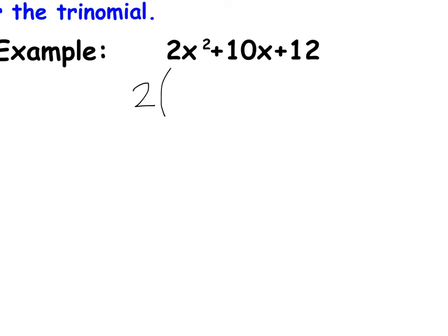2 divided by 2, 1 x squared. 10 divided by 2, 5 x. 12 divided by 2, 6. And so now we're left with a quadratic equation that our A is 1, and so now we can do that shortcut.